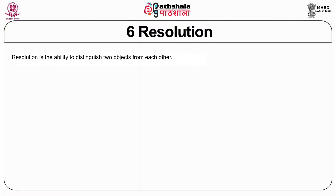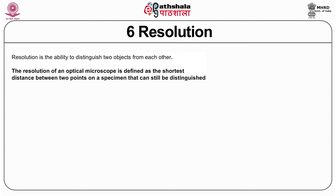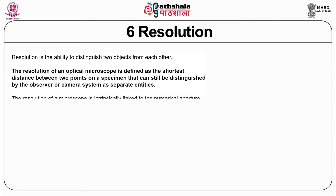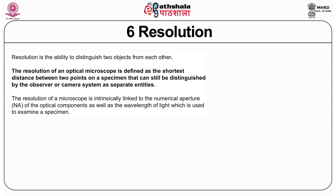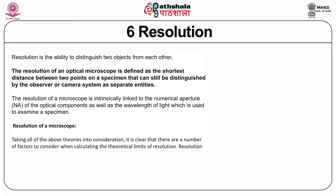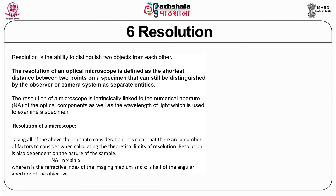Then comes resolution. Resolution is the ability to distinguish two objects from each other. It is defined as the shortest distance between any two points on a specimen that can still be distinguished by the observer — or by a camera — as two separate entities. The resolution of a microscope is intrinsically related to the numerical aperture of the lens being used and also depends on the wavelength of light being used.